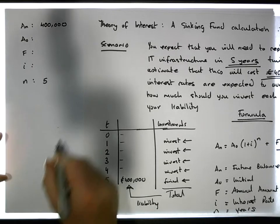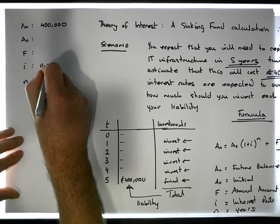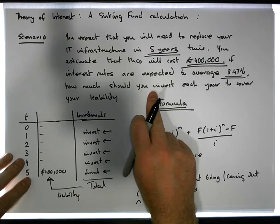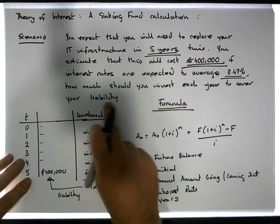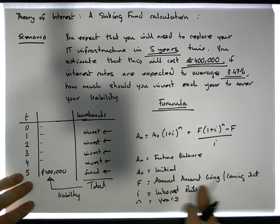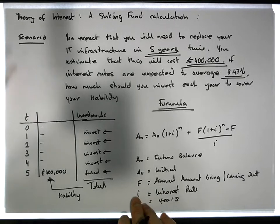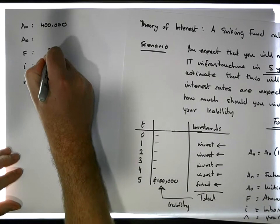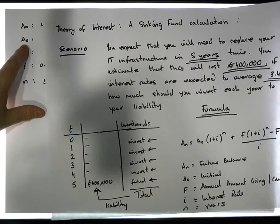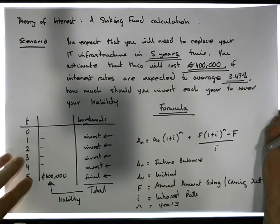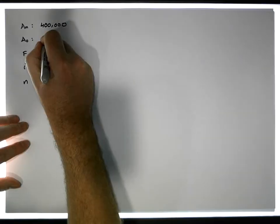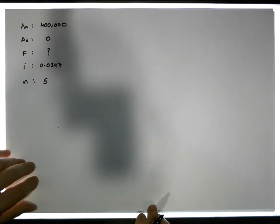Seven divided by 100 gives us 0.0347 as our interest rate. How much should we invest each year to cover our initial liability? We need to figure out f — the annual amount going in or coming out. A₀ represents any initial borrowings or initial investment. In this particular case there are no initial borrowings and no initial investment, so a₀ is equal to zero.